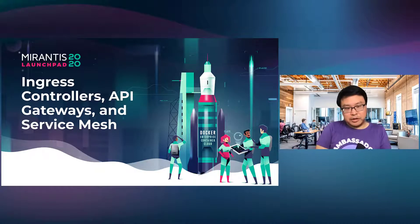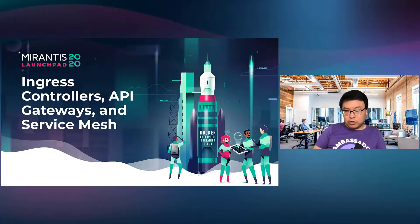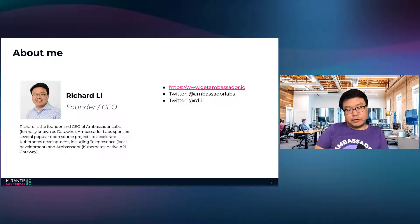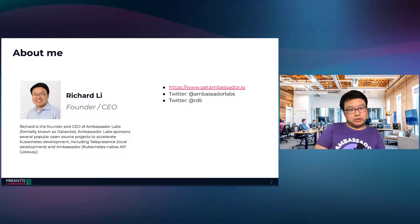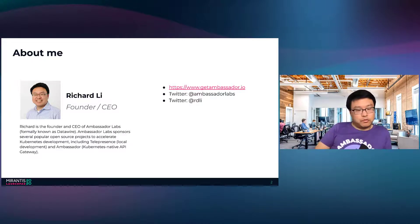Thank you everyone for joining. I'm here today to talk about Ingress Controllers, API Gateways, and Service Mesh on Kubernetes — three very hot topics that are also frequently confusing. I'm Richard Lee, founder and CEO of Ambassador Labs, formerly known as DataWire. We sponsor a number of popular open source projects that are part of the Cloud Native Computing Foundation, including Telepresence and Ambassador, which is a Kubernetes-native API gateway. Most of what I'm going to talk about today is related to our work around Ambassador.